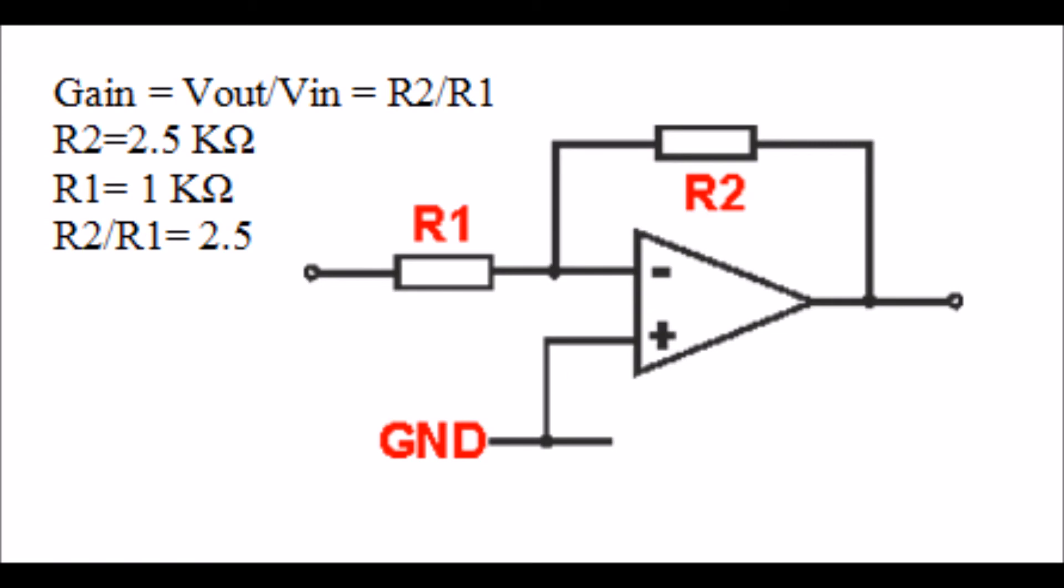Let's say we have a circuit with R1 as 1 kilo-ohm and R2 as 2.5 kilo-ohms. Since gain equals R2 over R1, the overall gain of the circuit is 2.5. In an ideal, non-railing circuit, this means that an input of 2 volts would have an output of 5 volts. Thank you.